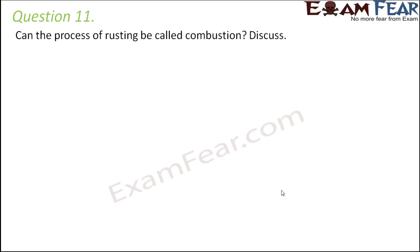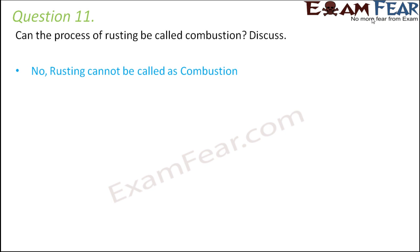Question number eleven: can the process of rusting be called combustion? Rusting happens in metals like iron or copper when they are exposed to moist air — they form oxides, resulting in a layer over their surface. Iron forms a reddish layer and copper forms a greenish layer. Rusting is also an oxidation process, where the metal combines with oxygen to form oxides.